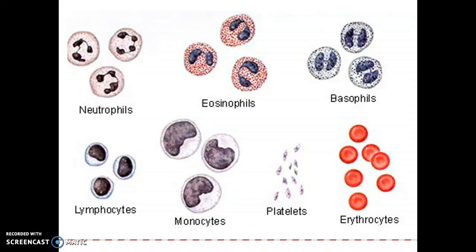Eosinophils stain red — they take up the eosin dye. They're very rare and are also PMNs with multi-lobes. Basophils look like eosinophils except they take up the basic blue dye. On a black-and-white test, it wouldn't be fair to distinguish those two since they look alike. Lymphocytes are small white blood cells that are mostly nucleus — they produce antibodies. Monocytes are bigger, with a huge nucleus and a large cell. When they leave the blood, they're called macrophages and eat bacteria. Mono means one — they have one big nucleus. Platelets are little pieces, also called thrombocytes — thrombus means clot — and they're not a true cell, just pieces of a cell involved in clotting. Erythrocytes are your red blood cells with no nucleus — they're anucleate.